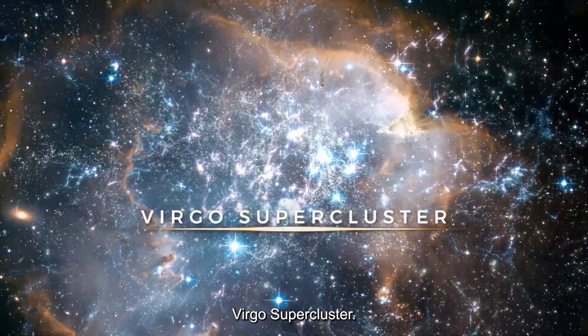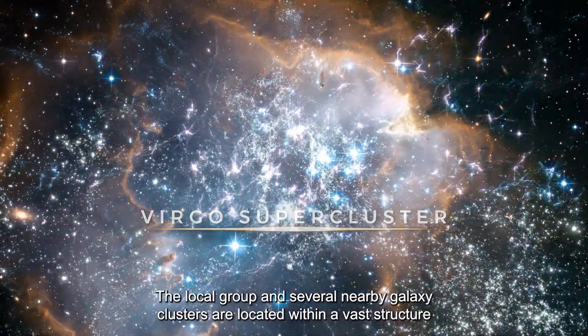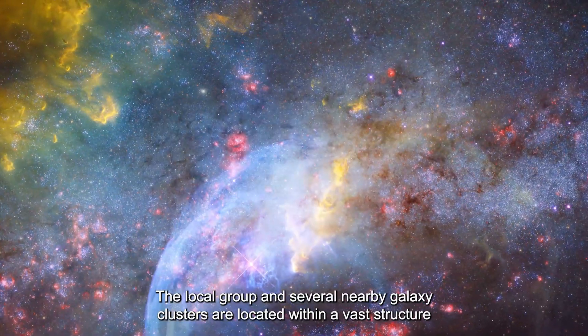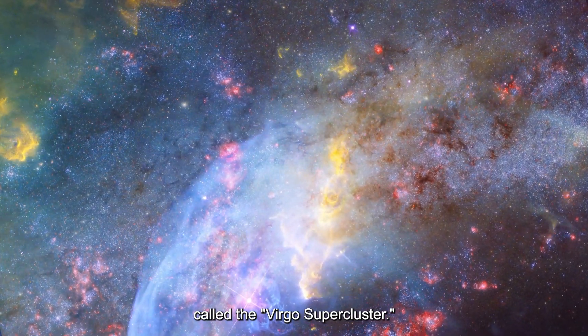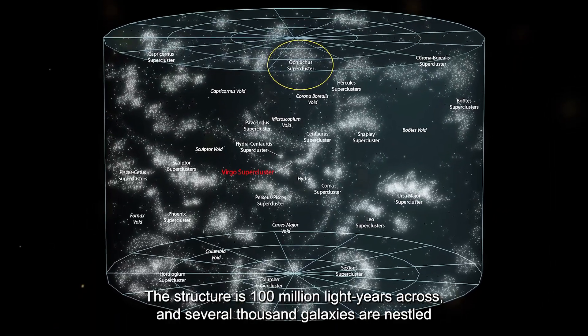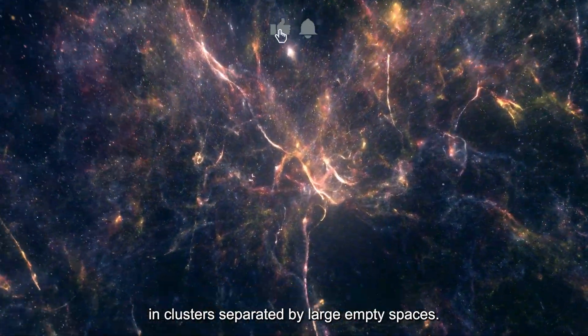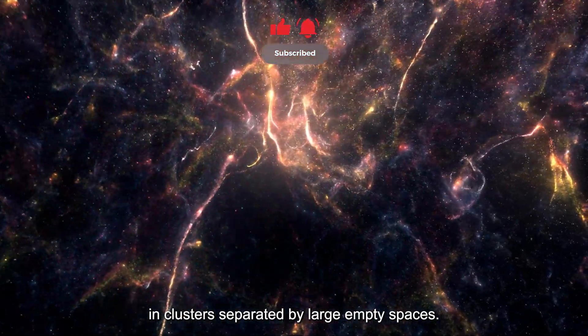Virgo Supercluster. The Local Group and several nearby galaxy clusters are located within a vast structure called the Virgo Supercluster. The structure is 100 million light years across, and several thousand galaxies are nestled in clusters separated by large empty spaces.